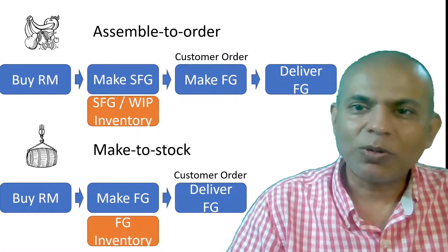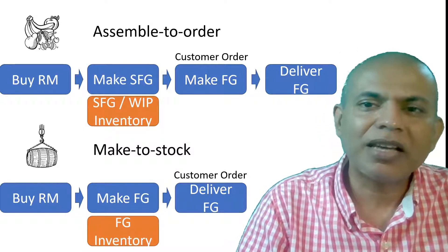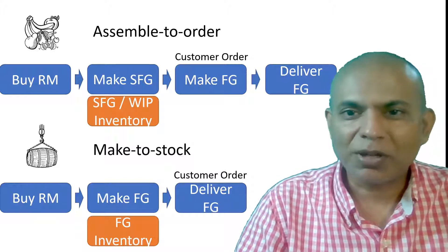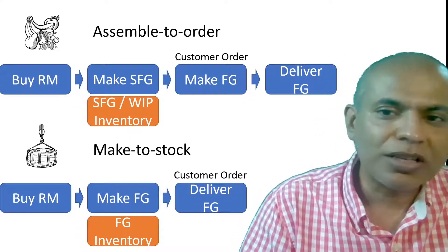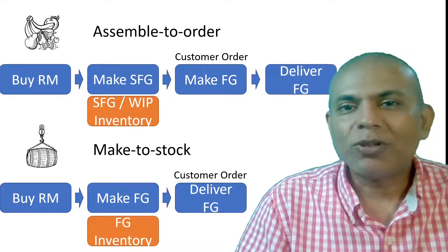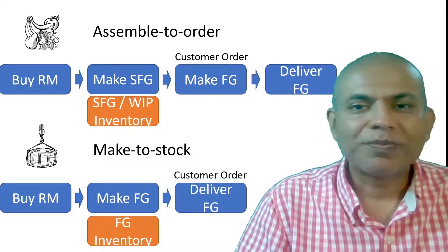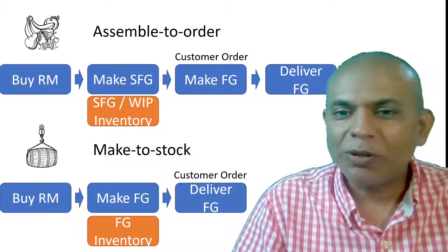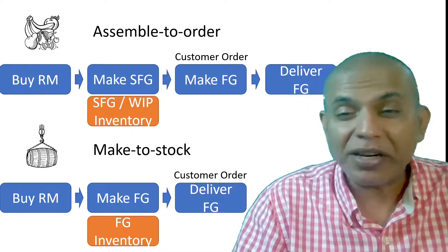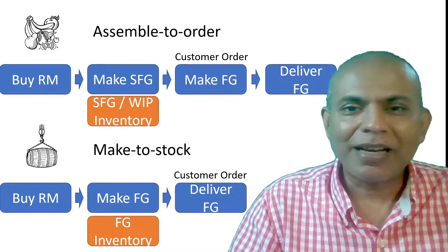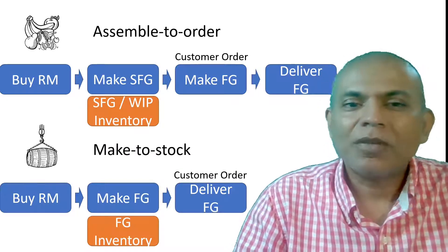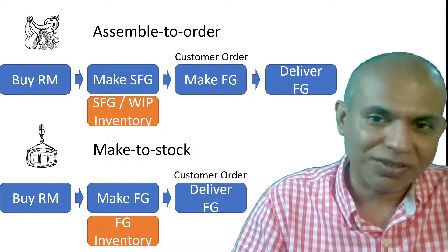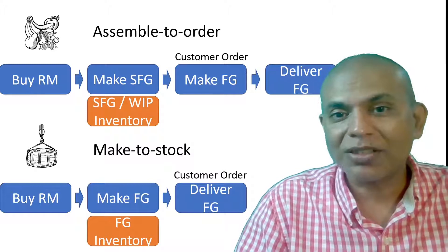The next situation is assemble-to-order. Assemble-to-order can be like a sandwich place where they keep semi-finished goods ready and inventoried in stock. As soon as the customer comes, they accept the order, mix and match those ingredients, and deliver a finished product. Consider color tinting machines in home improvement stores: they have a white primer and maybe 7 to 14 shades, which are mixed in different proportions to make the exact pink shade a customer wants. The WIP inventory is maintained based on the forecast of customer orders, and the exact mixing and matching is done after the customer order is received.